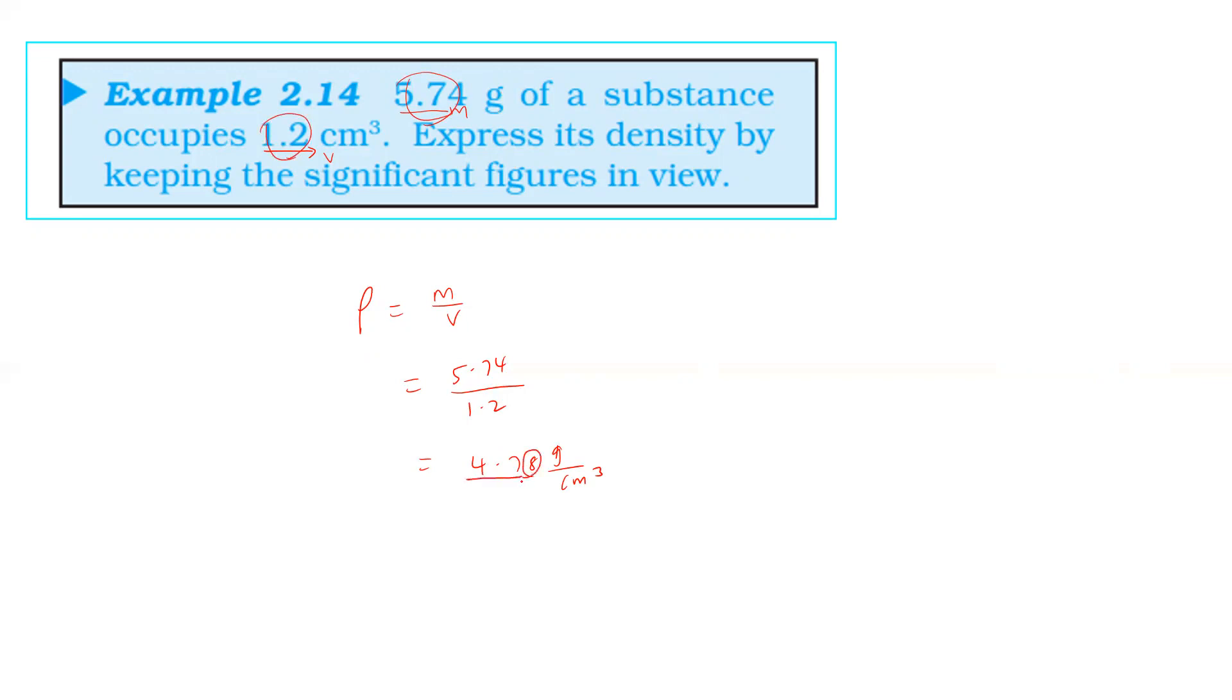Then we drop 8. So preceding number rises by 1. 8 is greater than 5. So preceding number rises. 4.8 grams per centimeter cubed. The answer is correct.